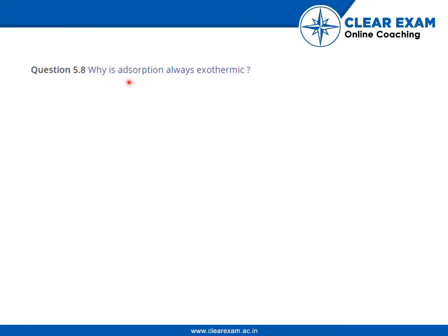The question is: why is adsorption always exothermic? Exothermic refers to a reaction in which heat is released. An exothermic reaction is also defined as one where the enthalpy of the reaction, denoted by delta H, is less than zero — meaning it is negative.